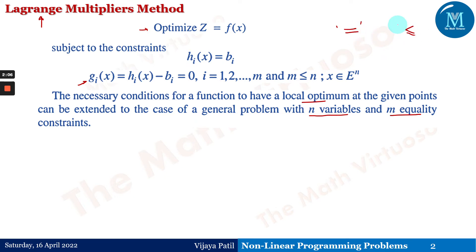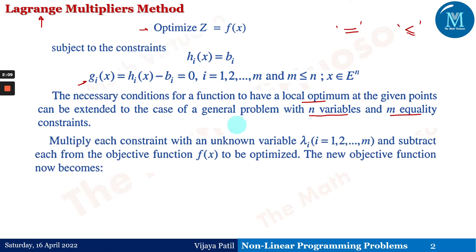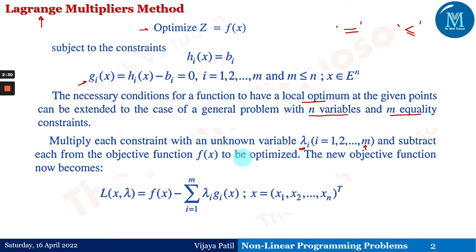Note that in the Lagrangian multiplier method we deal with equality constraints, whereas in the KKT conditions we dealt with less-than-or-equal-to constraints. Multiplying each constraint with an unknown lambda_i and subtracting from the objective function f(x) to be optimized, the new objective function becomes L(x, λ), which is f(x) minus the summation of λ_i · g_i(x), with i moving from 1 to m.